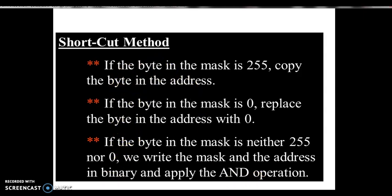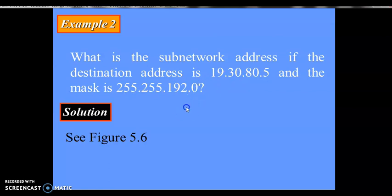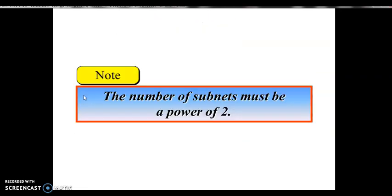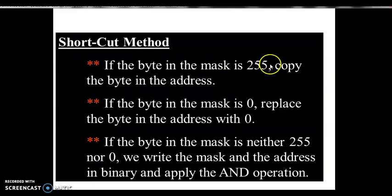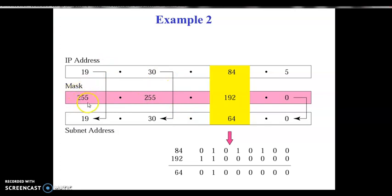We'll understand all three steps with an example. What is the subnetwork address if the mask is 255.255.192.0? We are asked to find the subnet network address given the destination IP address and the mask. Applying the rules: since the first byte of the mask is 255, we copy the IP address byte. Since the second byte of the mask is 255, we copy the IP address byte again.